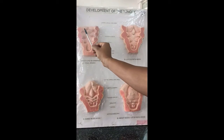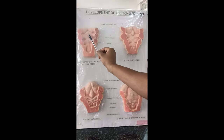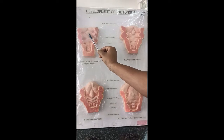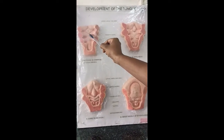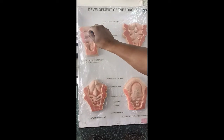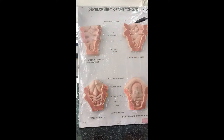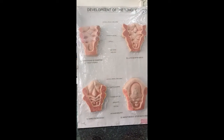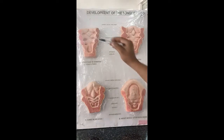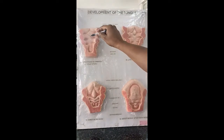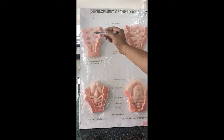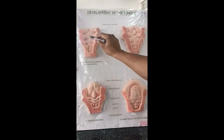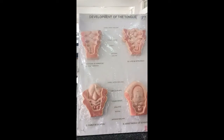These two are the lingual swellings and this is the tuberculum impar. Behind that, you can see the foramen cecum. From the foramen cecum, there will be an invagination going down to form the thyroid gland. The endoderm of the foramen cecum invaginates and forms a thyroglossal duct, and the thyroglossal duct goes on to form the thyroid gland.